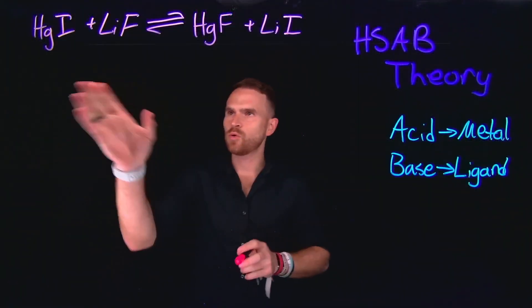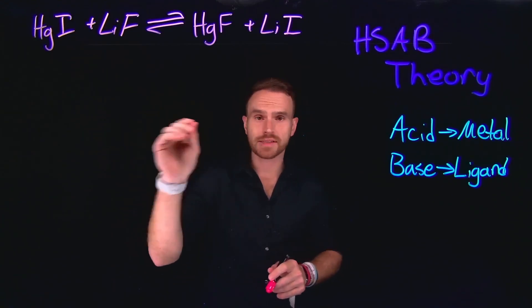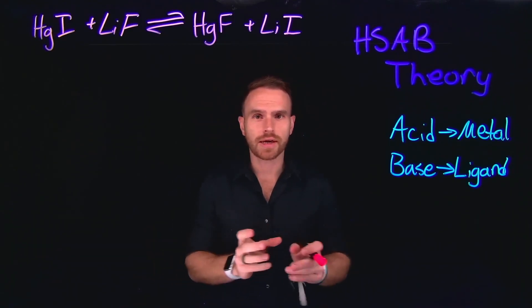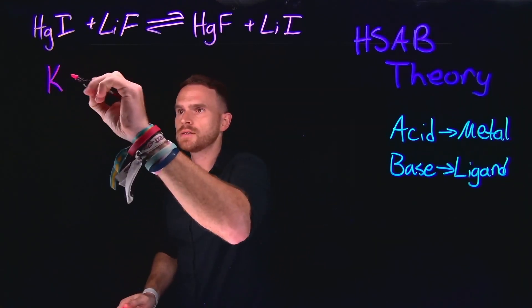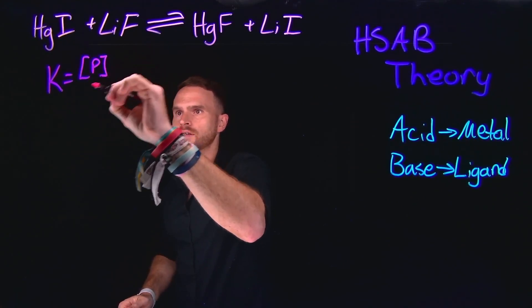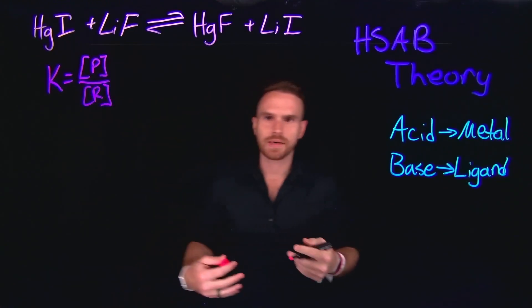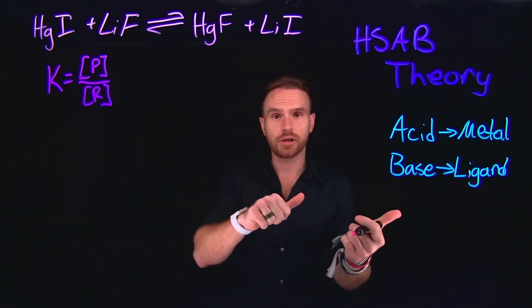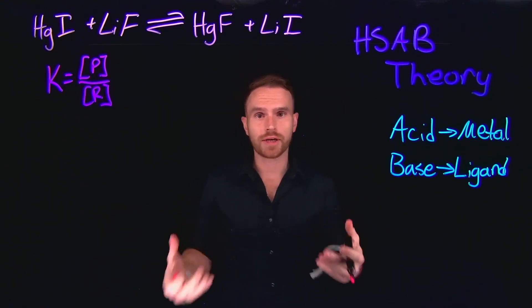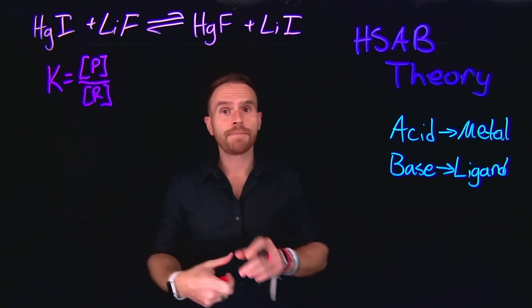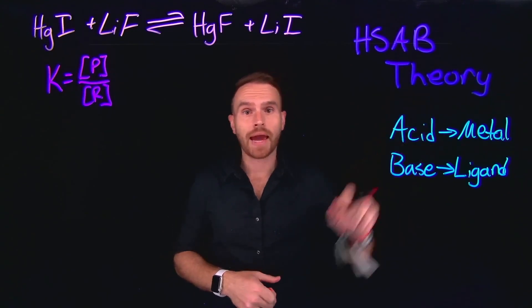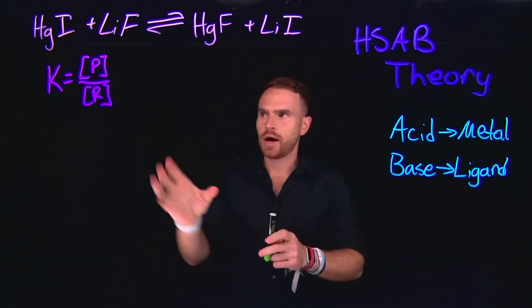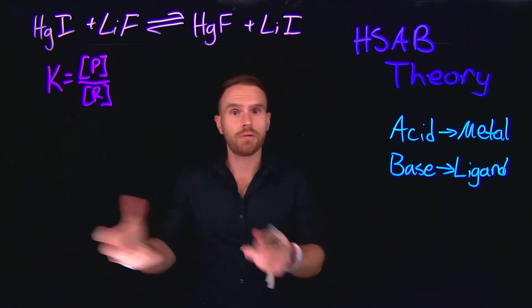Let's examine an example where we have a chemical equation at equilibrium: HgI + LiF ⇌ HgF + LiI. These questions often ask about the equilibrium constant. Remember that K equals the ratio of products to reactants. A very large K means equilibrium is shifted towards the products; a very small K means equilibrium is shifted to the left toward the reactants.